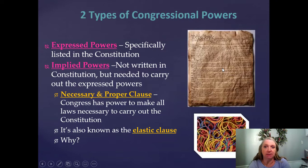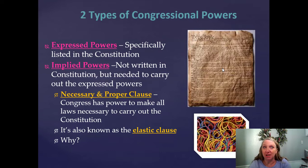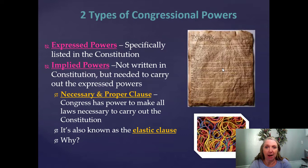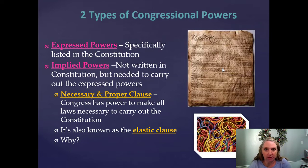There are two types of Congressional powers. There are expressed powers, which are specifically listed in the Constitution — sometimes also referred to as enumerated powers, so write 'enumerated' off to the side. And then there are implied powers, which are not written in the Constitution, but these things need to happen in order to carry out the expressed powers. Implied powers are rooted in expressed powers; if they're not, then they're probably not going to be allowed.